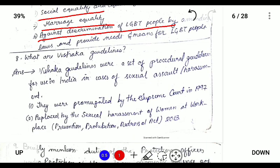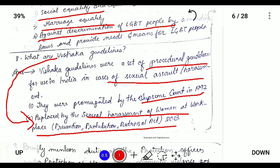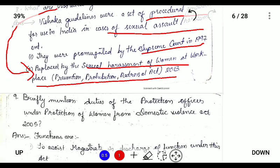What are Vishaka Guidelines? The Vishaka Guidelines were launched before the Sexual Harassment of Women at Workplace Act 2013. They are procedural guidelines on cases of sexual assault or harassment, promulgated by the Supreme Court in 1997. However, the Vishaka Guidelines were later replaced by the Sexual Harassment of Women at Workplace (Prevention, Prohibition and Redressal) Act 2013.